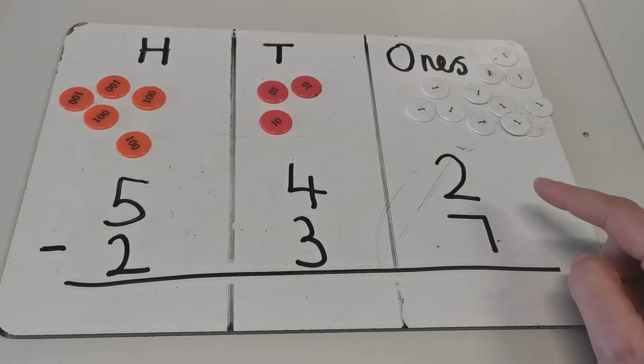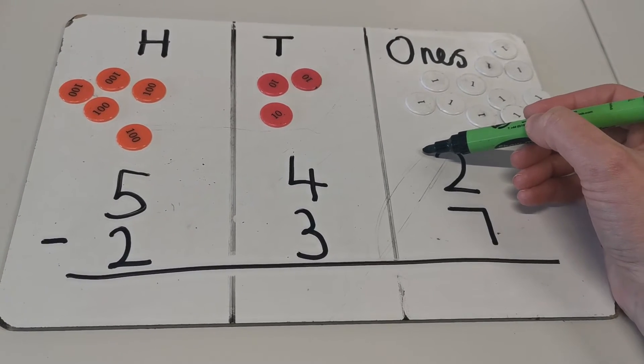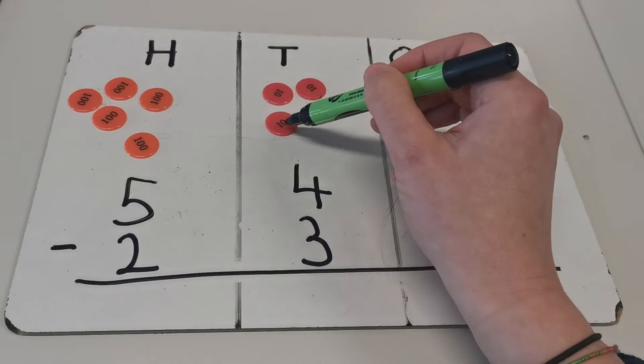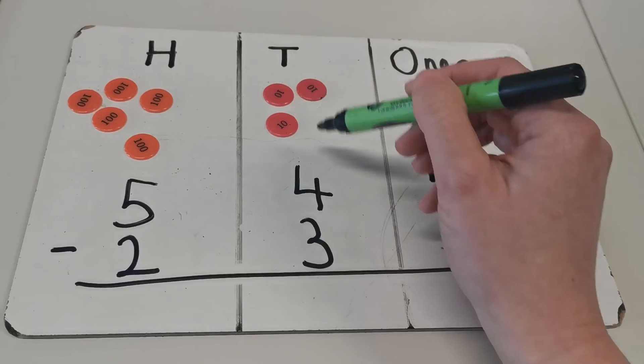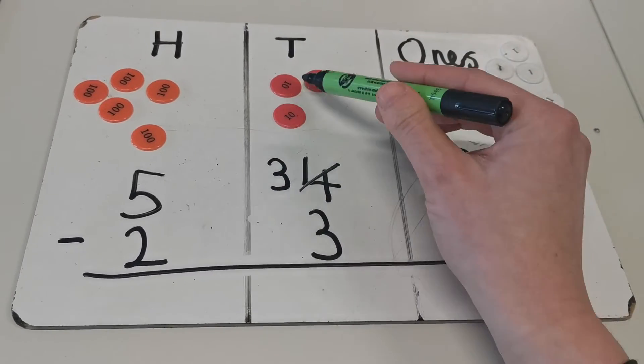I have now twelve ones and I can subtract seven, so you need to put a one there to say that I've exchanged one of these tens for ten ones, so I now have three tens and I have ten ones.